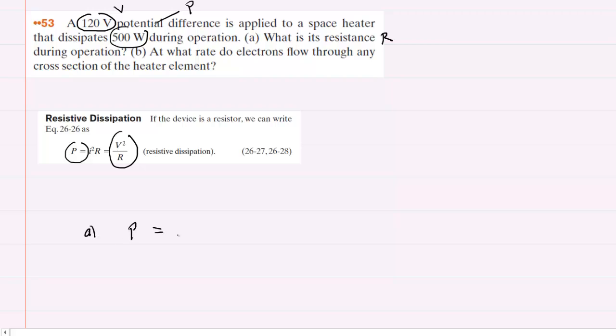We'll use that equation for part A. Let's first solve this equation for resistance. Multiply both sides by resistance so it cancels on the right side, then divide both sides by power. The power cancels on the left side, so we are left with resistance equaling potential difference squared divided by power.